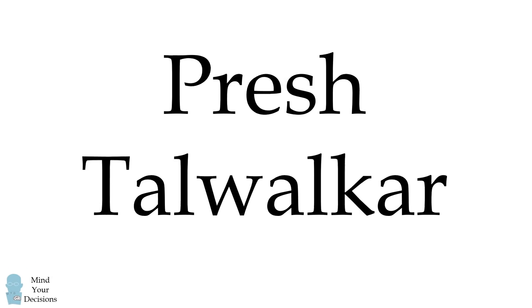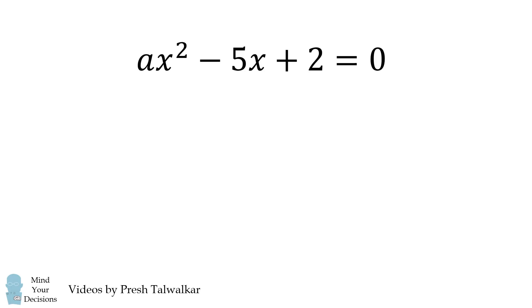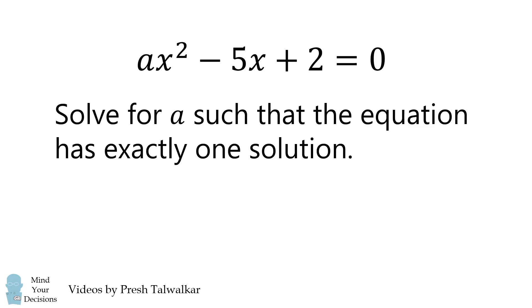Mind your decisions, I'm Presh Talwalkar. Consider the equation ax² - 5x + 2 = 0. Solve for a such that the equation has exactly one solution.